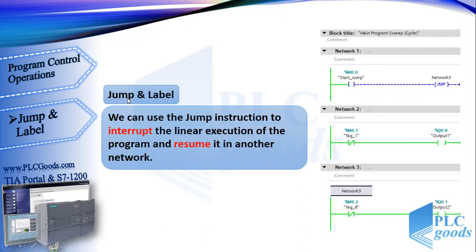The first is jump and label. We can use the jump instruction to interrupt the linear execution of the program and resume it in another network. Let's see what this instruction does in this program. Here we have three networks. In the first network, a jump instruction is used which refers to Network 3.